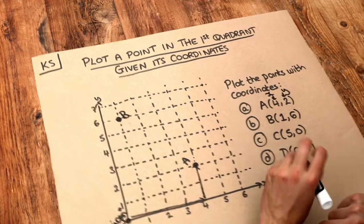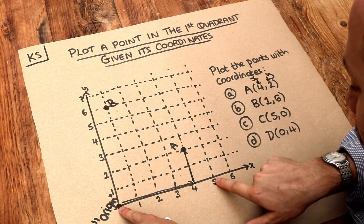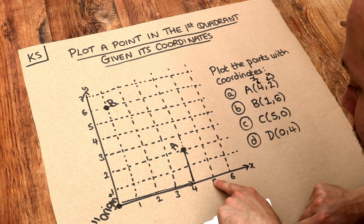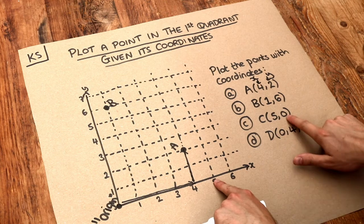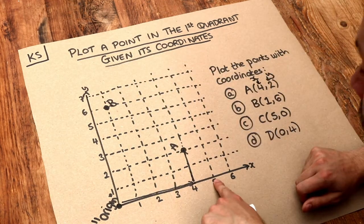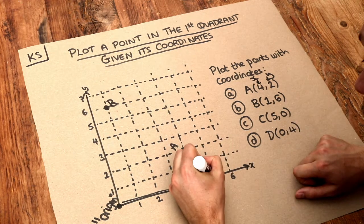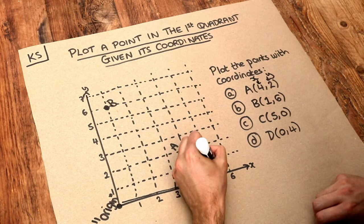What about C (5,0)? We have to go 5 on the x-axis in the left-right direction, and then 0 along in the y direction, the vertical direction. Well, that means I don't move at all in the vertical direction because that's 0, and therefore we stay here. So that will be point C.